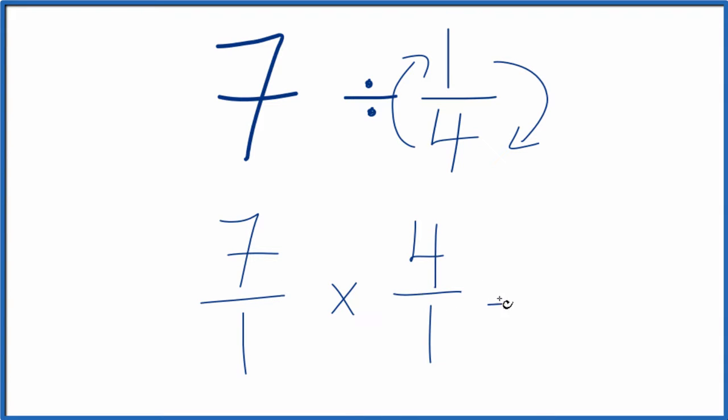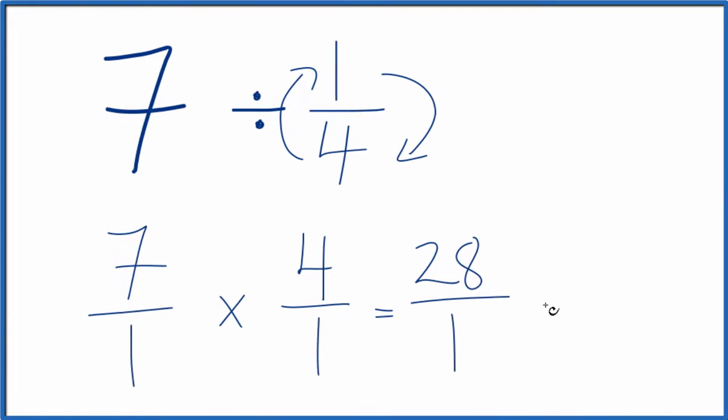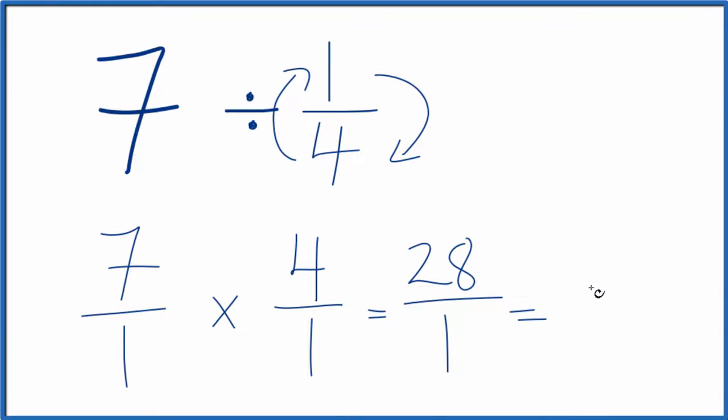7 times 4, that equals 28. 1 times 1 is 1. And 28 over 1, if you divide 28 by 1, you get 28.